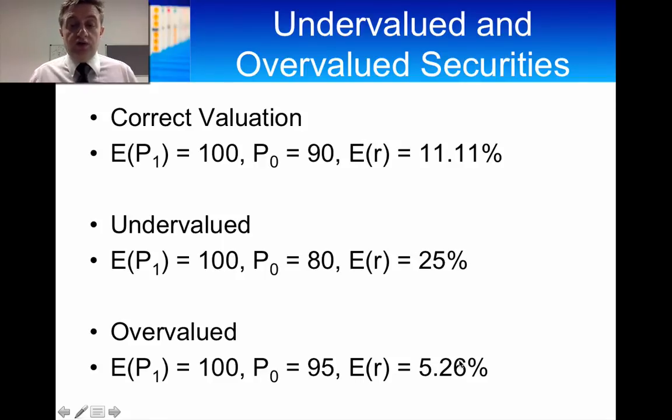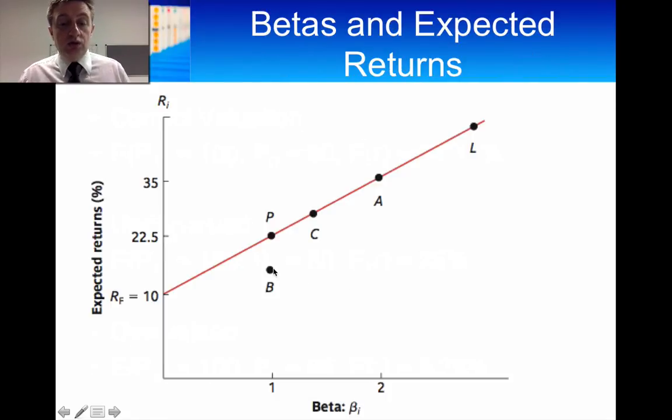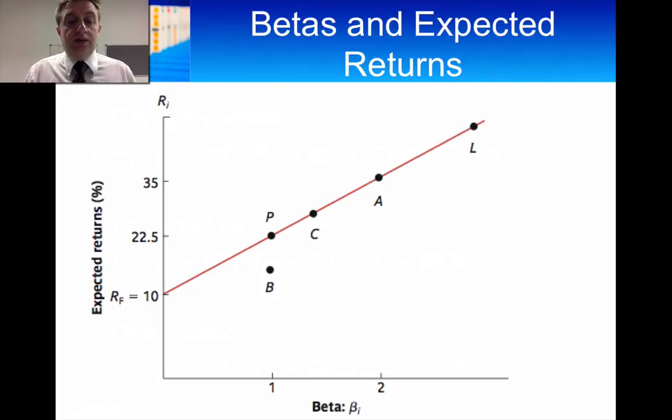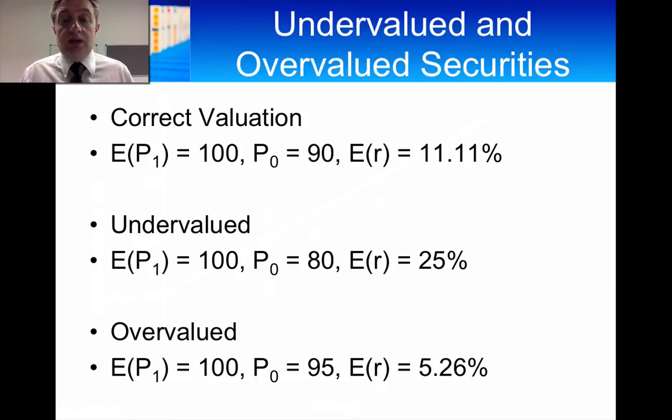and all you're doing there is just taking 100 minus 95 divided by 95, the expected return is 5.26%. So it's lower than the correct expected return of 11.1%. So therefore, you're going to sell that and buy this. Arbitrage will then put that into that line. So any correctly valued assets will be on that line. And that means that this model will correctly predict the expected returns on an asset or portfolio.